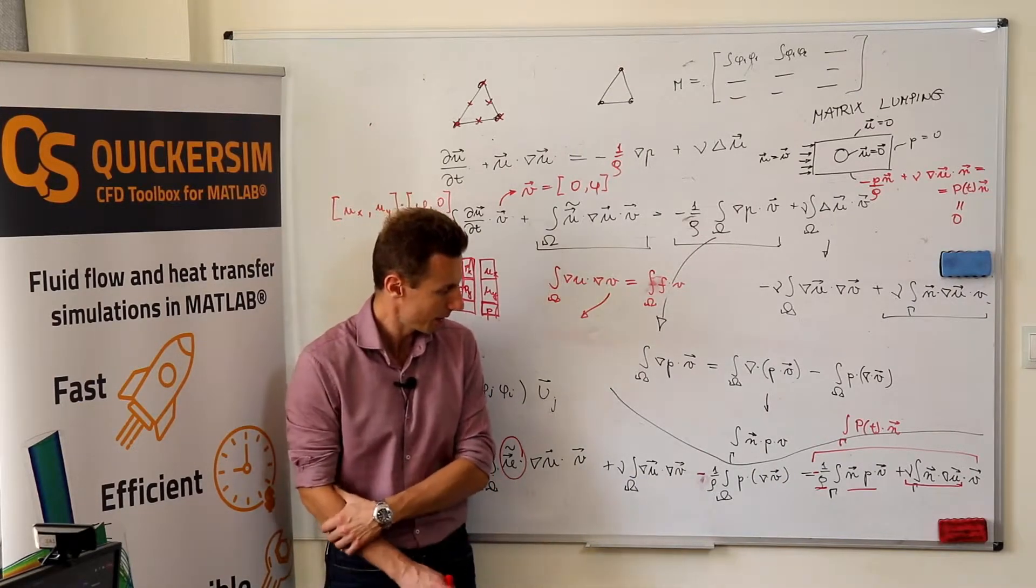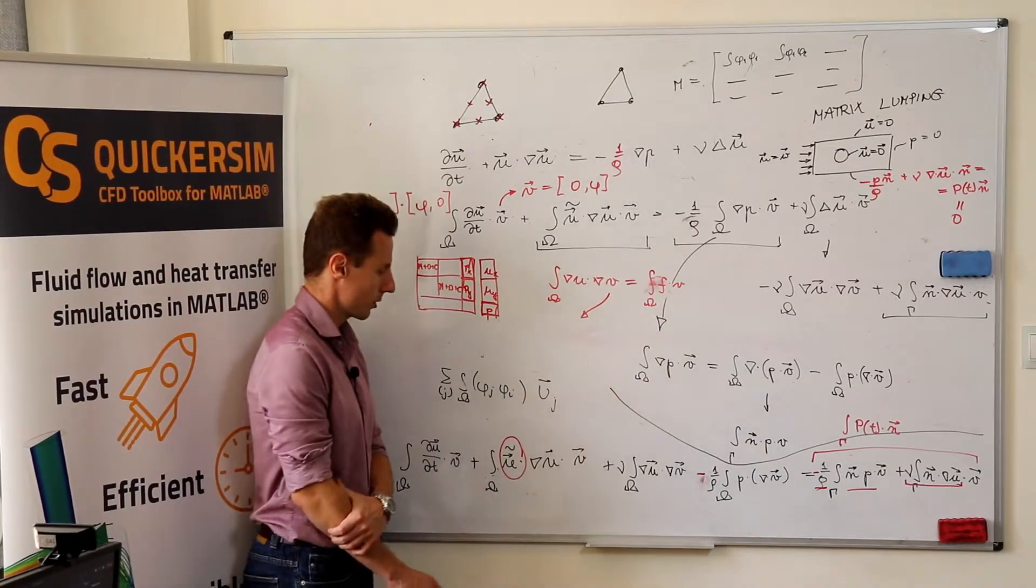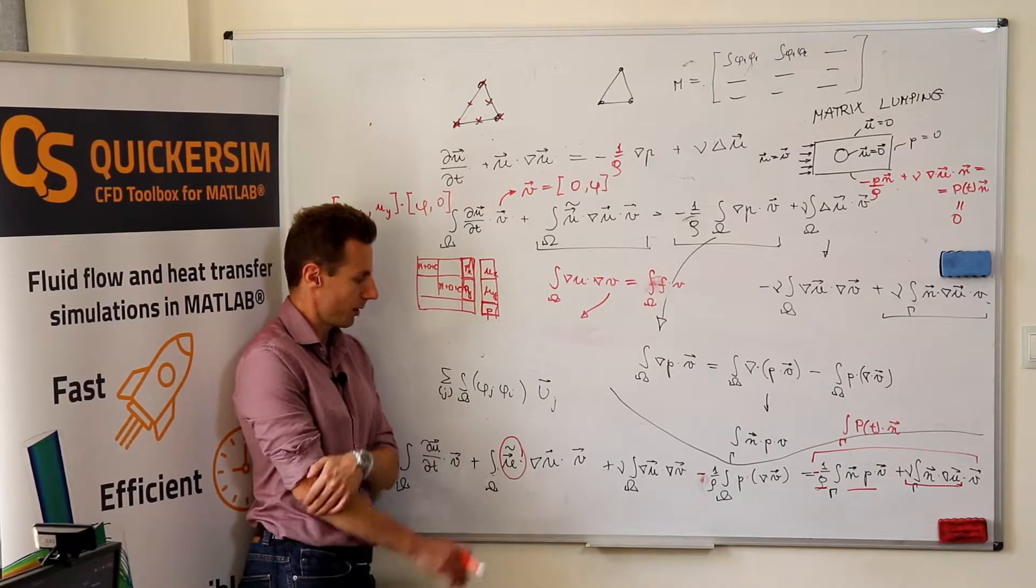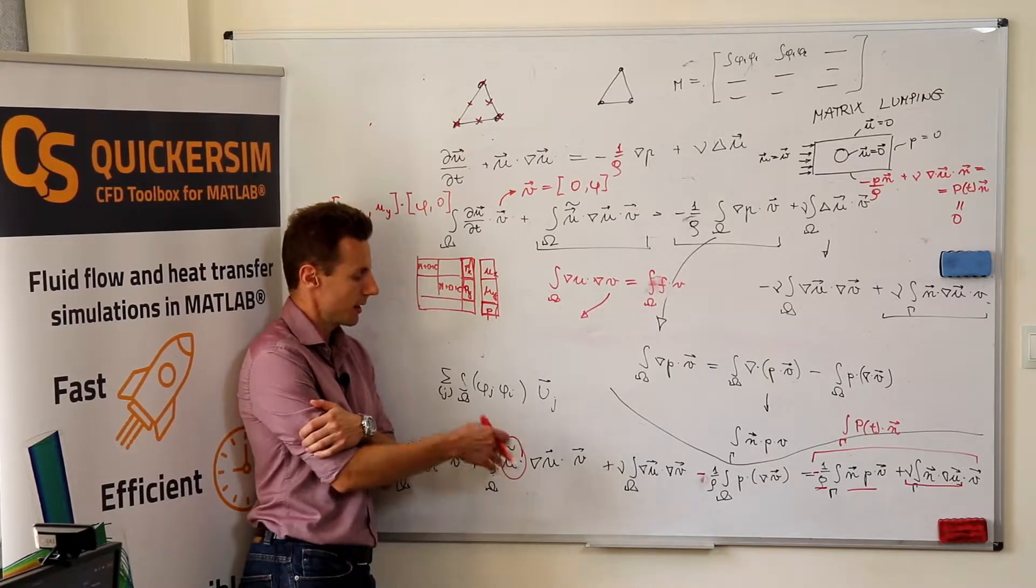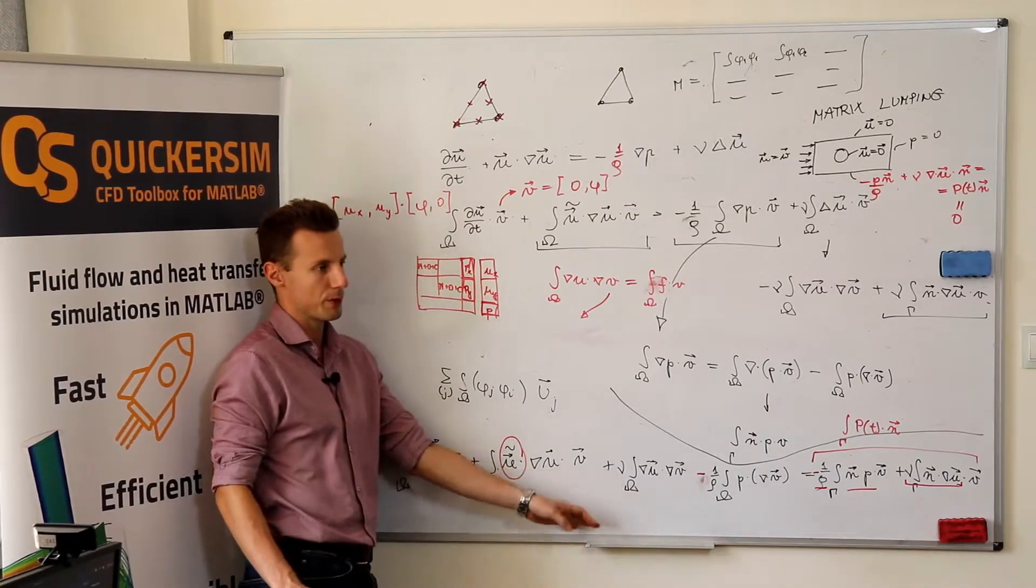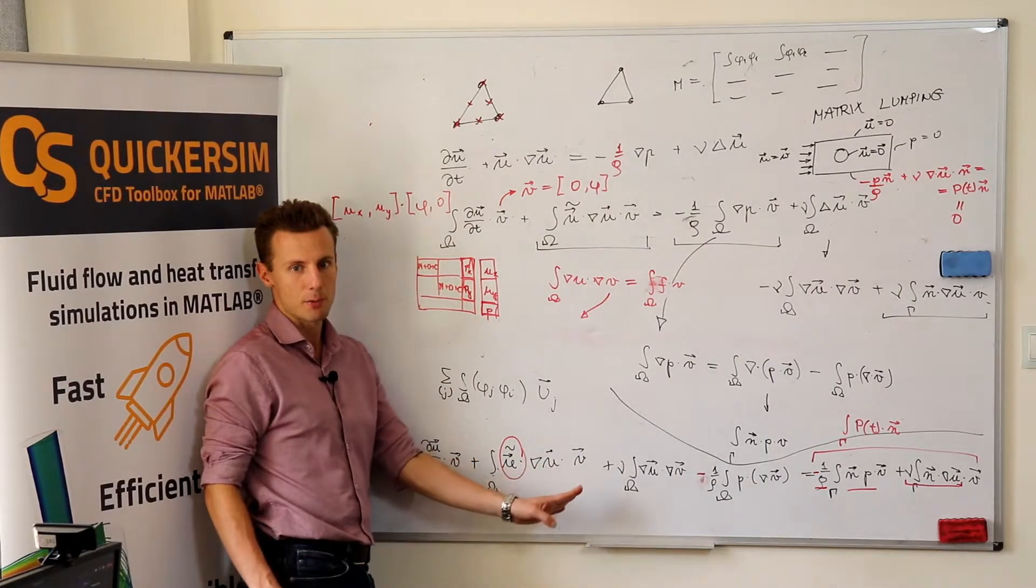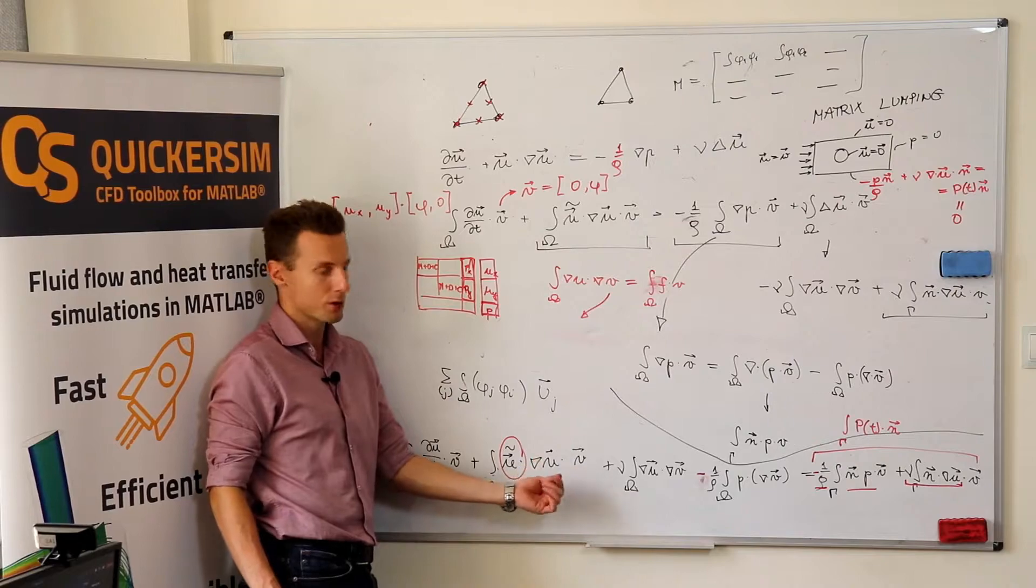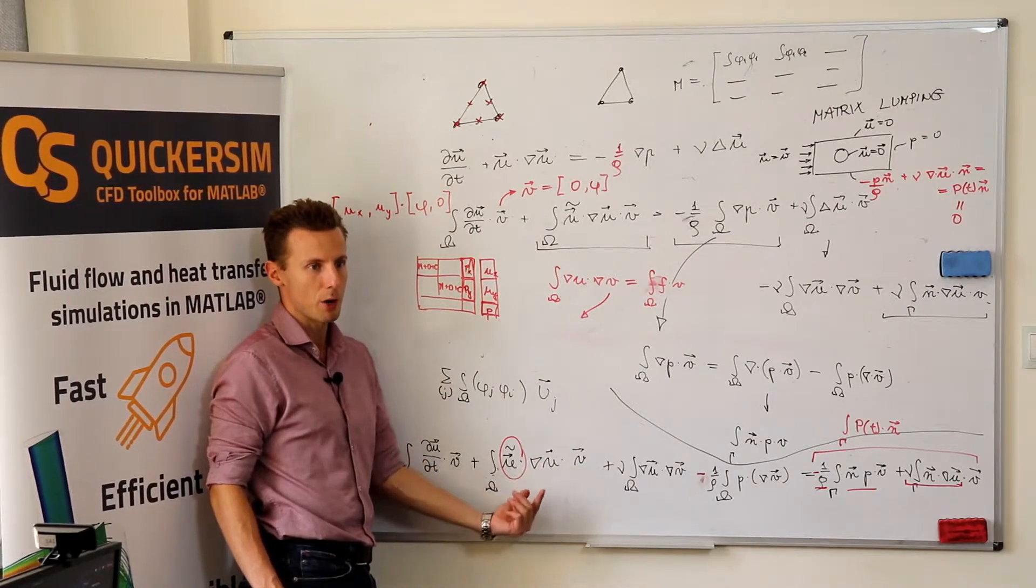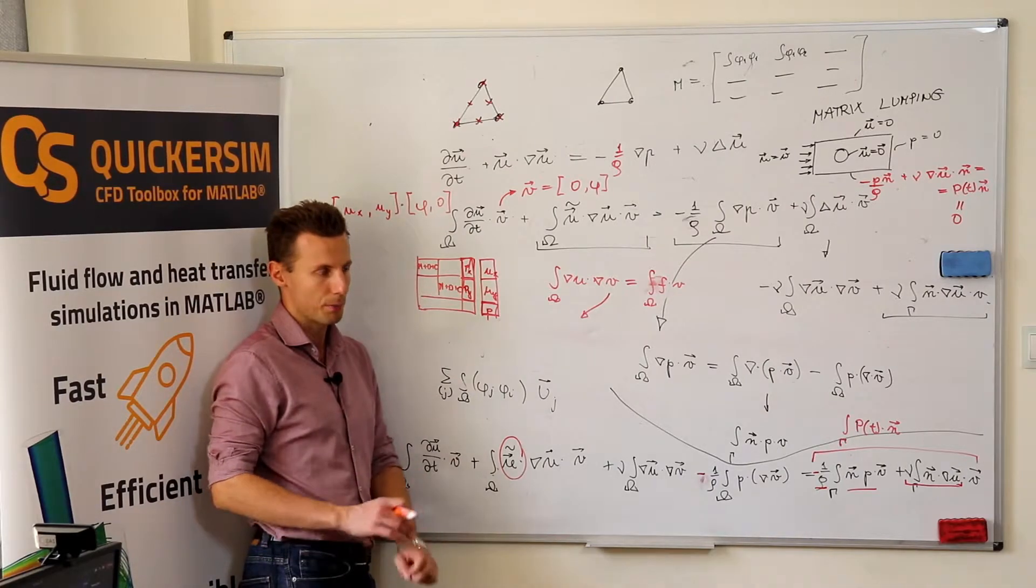Exactly. And then with each next iteration, you replace the new, the convection velocity. You replace it by the velocity solution from the previous time step. At the end of such a, once it converges, well, actually, this and that is arbitrarily close to each other, so you've got the proper solution.